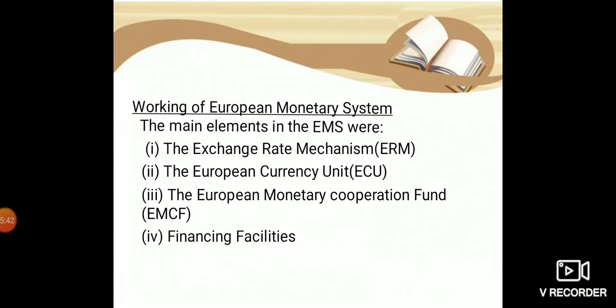Working of the European Monetary System: The first main element is the Exchange Rate Mechanism (ERM), a system introduced by the European Economic Community in 1979. The ERM was established to keep the exchange rates of member countries within specified bands in relation to each other. Most exchange rates fixed by the EMS until 1993 could fluctuate up or down by 2.25% against any currency.